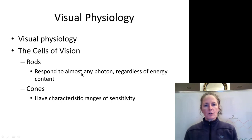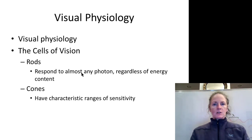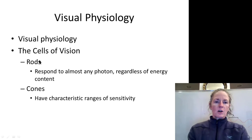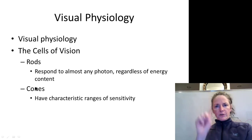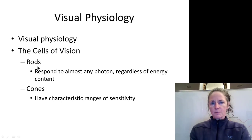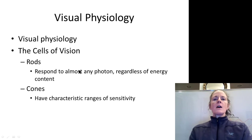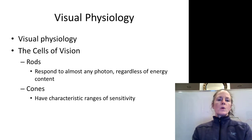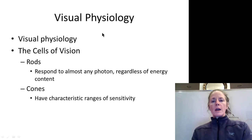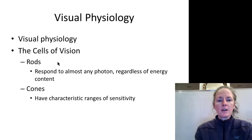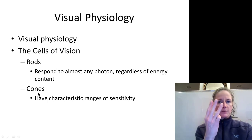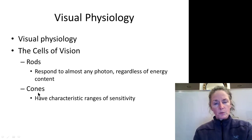Now let's talk about the cells that transduce light into a neural impulse — the rods and cones. Rods and cones are photoreceptors. We have two types: rods, which distinguish black and white only and respond to very low light conditions, and cones, which are for color vision. People with normal color vision have three types of cones: red cones, blue cones, and green cones.